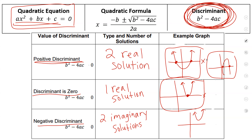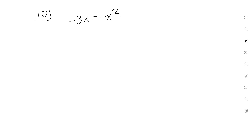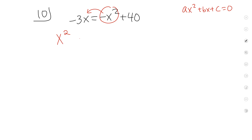Let's look at an example. I'm going to choose number 10 off of your page. Now the first question is: is this in standard form? Standard form looks like this: ax² + bx + c = 0. It is not in standard form, so we need to put it in standard form before we start. That means this needs to go on the other side, so it will become a positive x² minus 3x. This also needs to go to the other side — it becomes minus 40. Now it's in standard form.